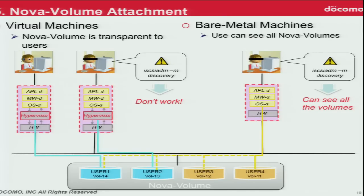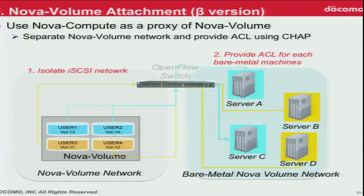For Nova volume attachment in a bare-metal environment, there is no hypervisor. So if you do iSCSI discovery, you can see all Nova volumes and attach any volume you want — we need a mechanism to protect against this. The solution is similar to network isolation: we use Open vSwitch to isolate the iSCSI network, and we use CHAP for the ACL.